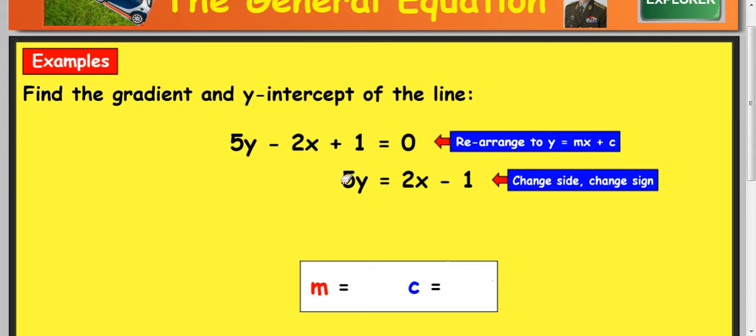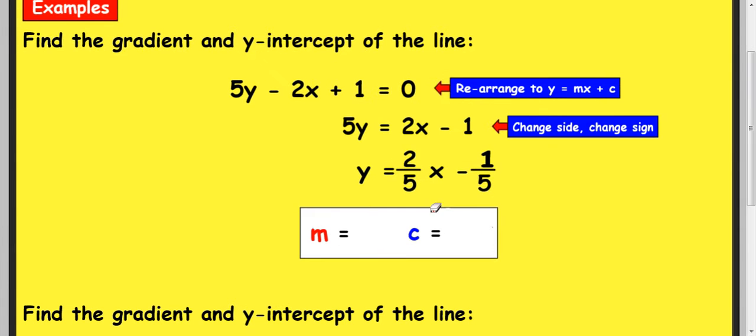Right, finally divide by 5 to get into y equals mx plus c. So just divide the 2 by 5 and write it as a fraction. Take away and then divide the 1 by 5 and just leave it as a fraction. You can then pick out your gradient and your intercept.